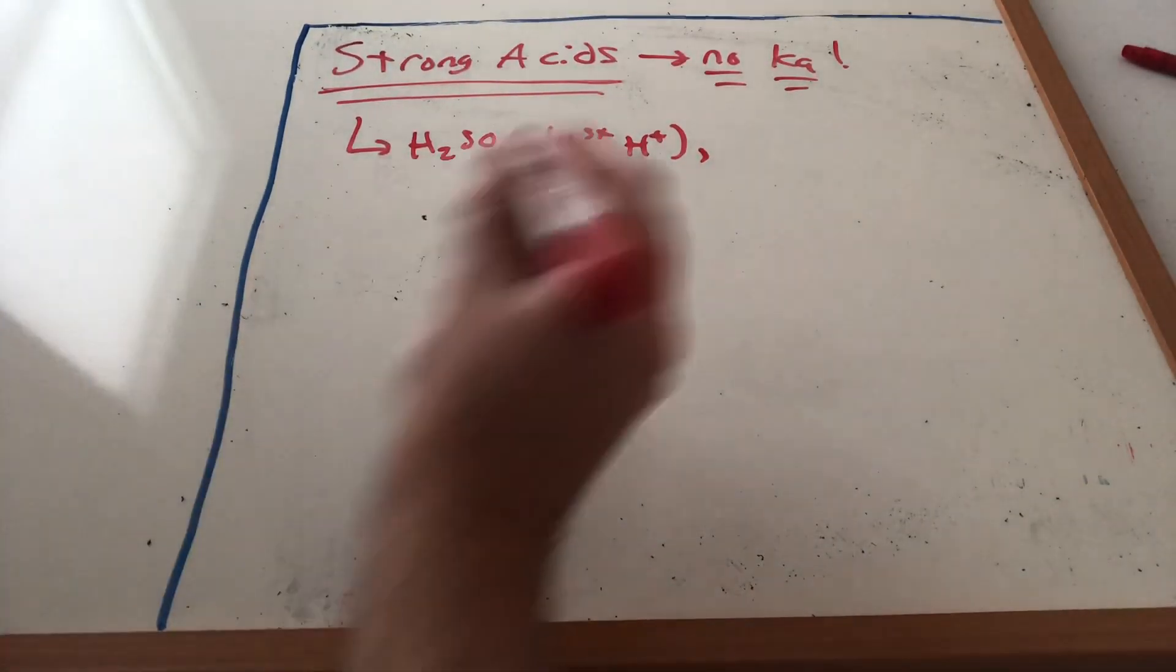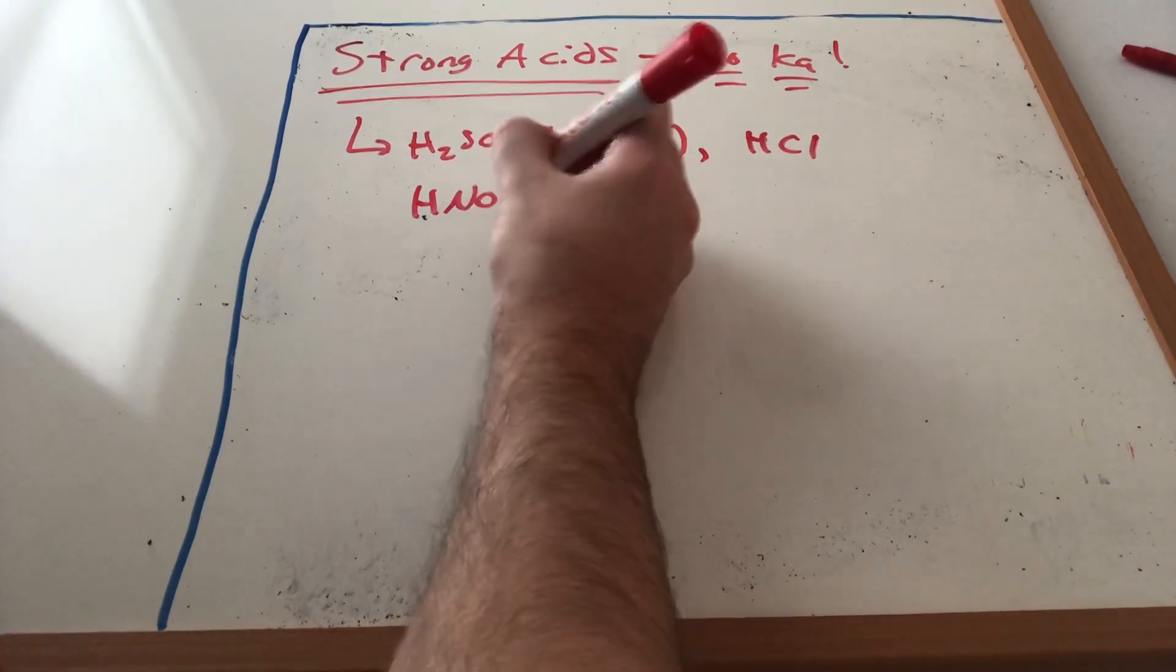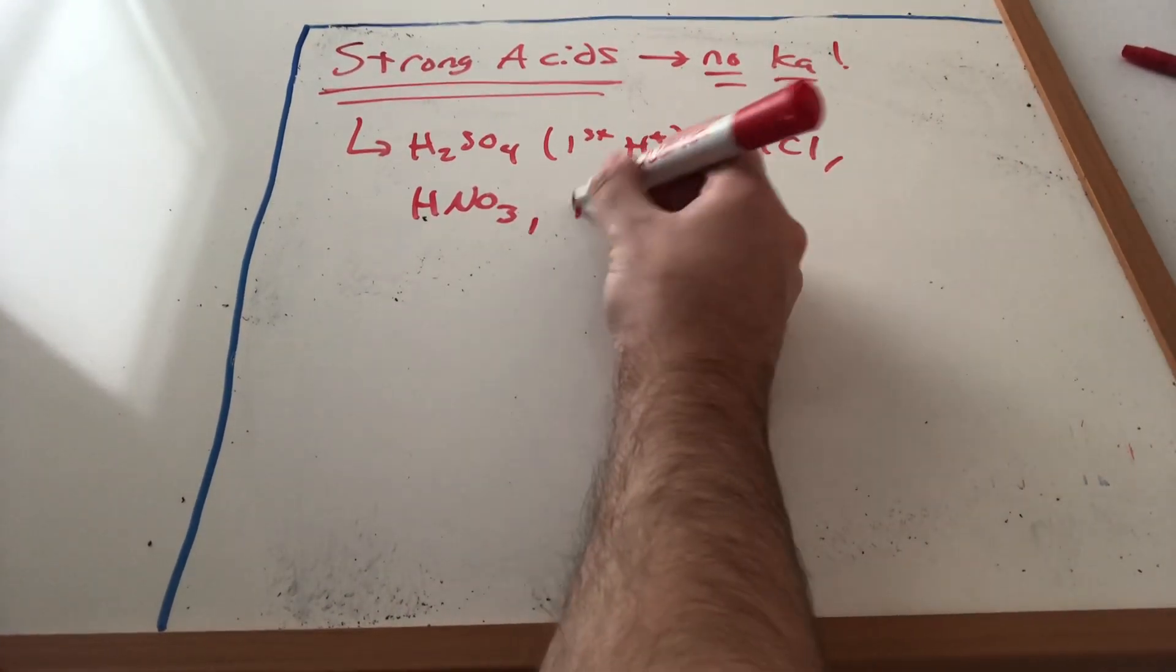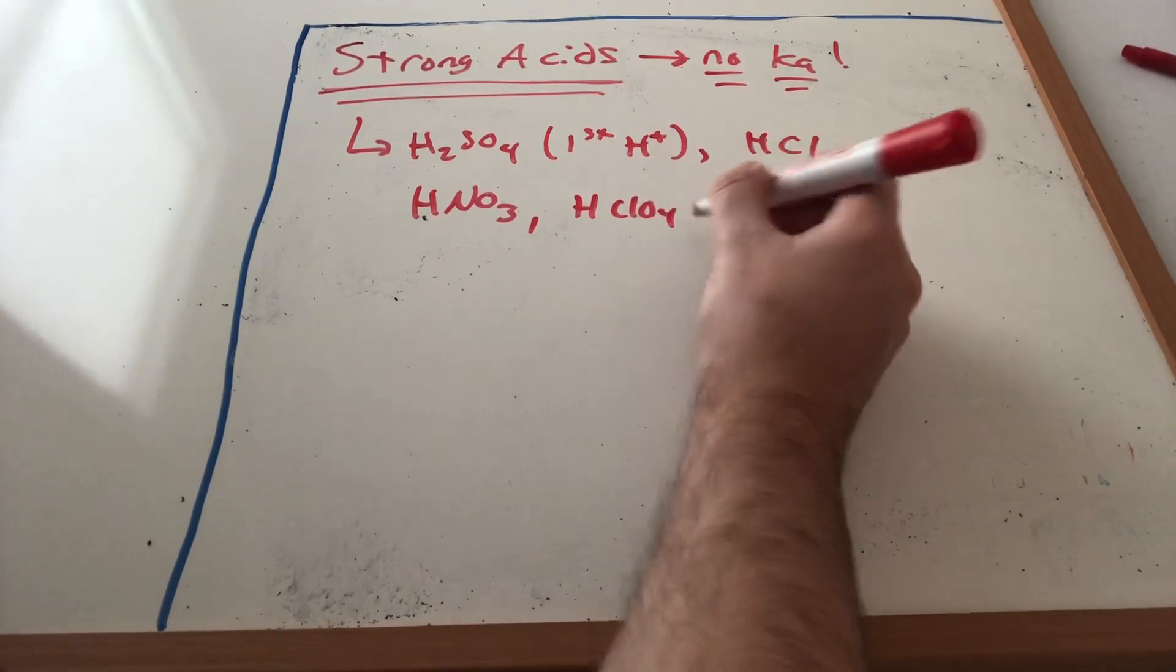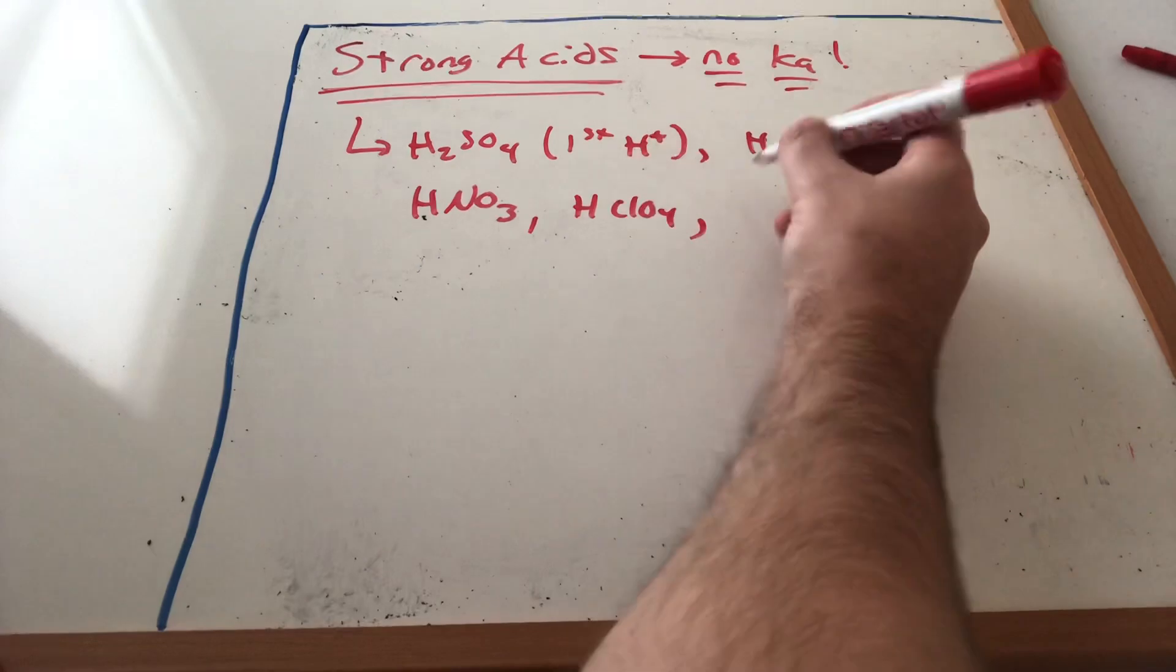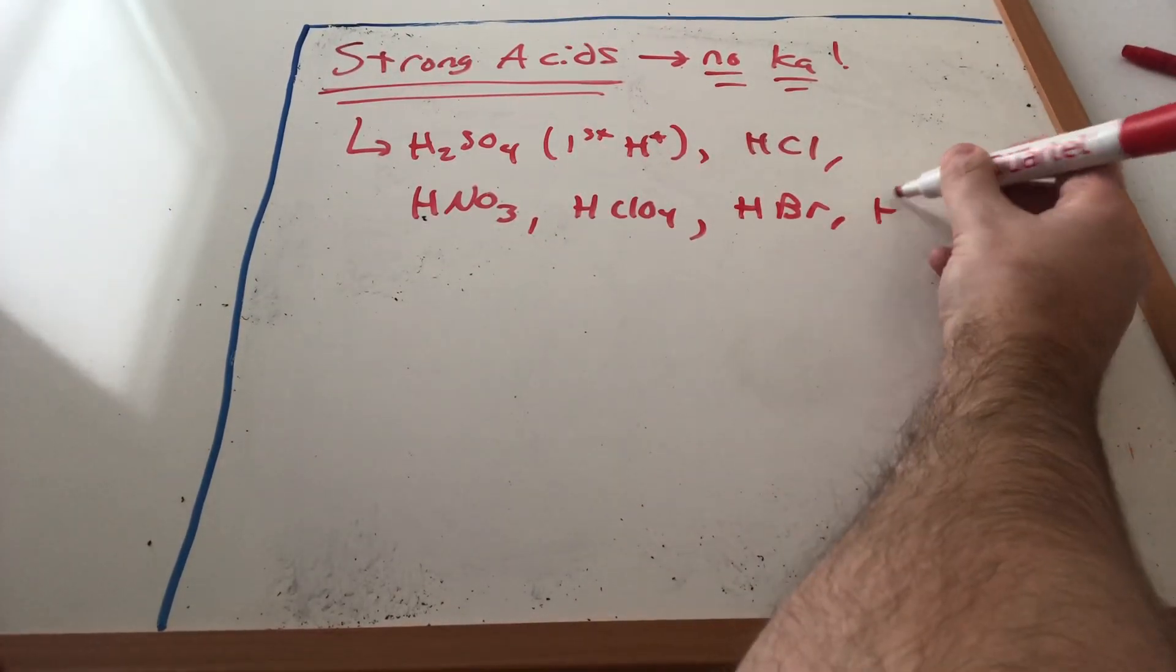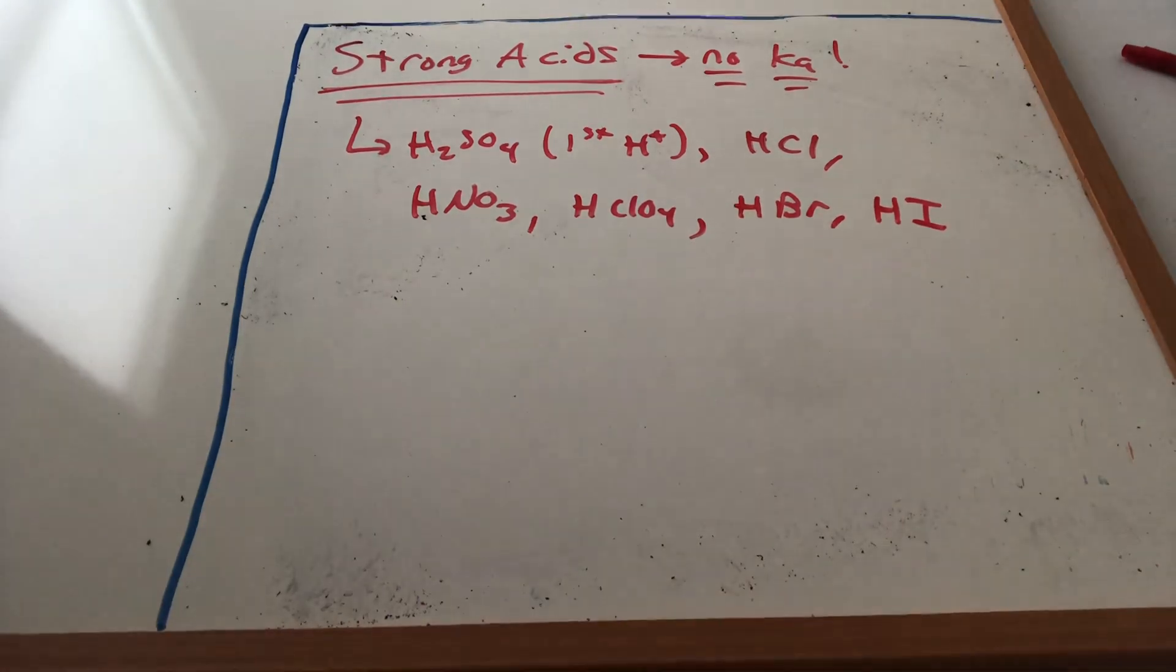We'll talk about polyprotic species next week, but we're still going to include this in our list. HCl, HNO3, HClO4 perchloric acid, HBr hydrobromic acid, and HI hydroiodic acid. Those are our list of strong acids.